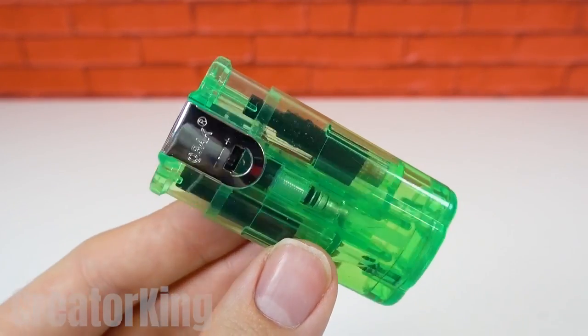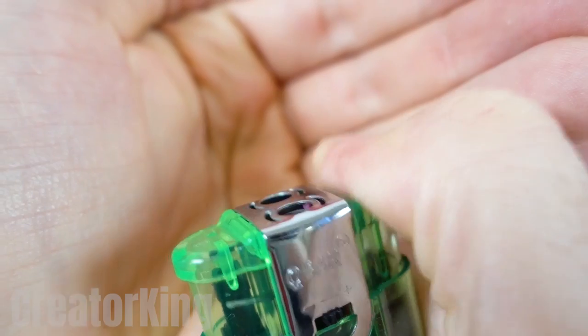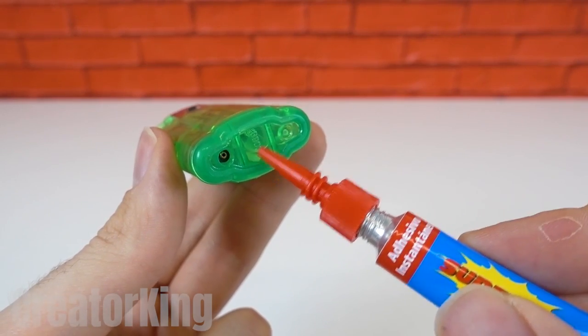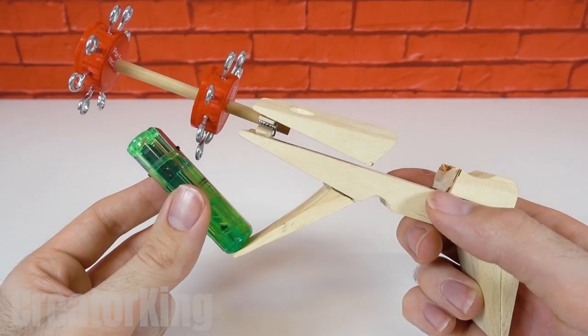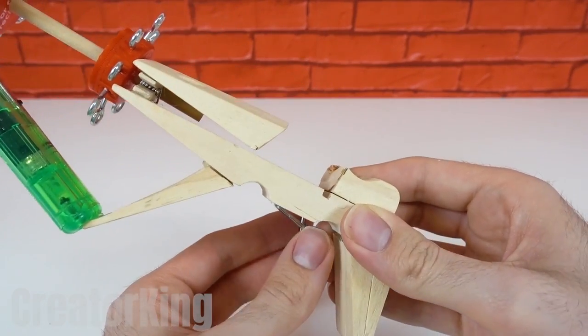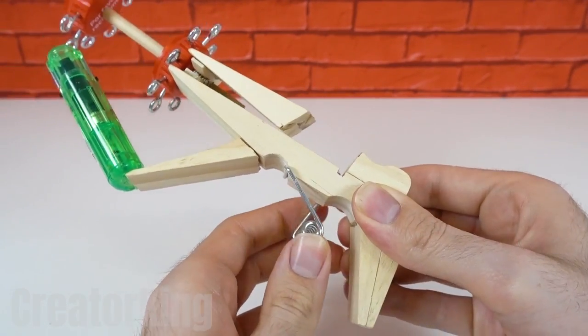Next let's add the hottest piece to our final invention. Apply instant glue to the base of the lighter and glue it to the launcher leg. Now reattach one of the mega clothespins to the body of the structure.